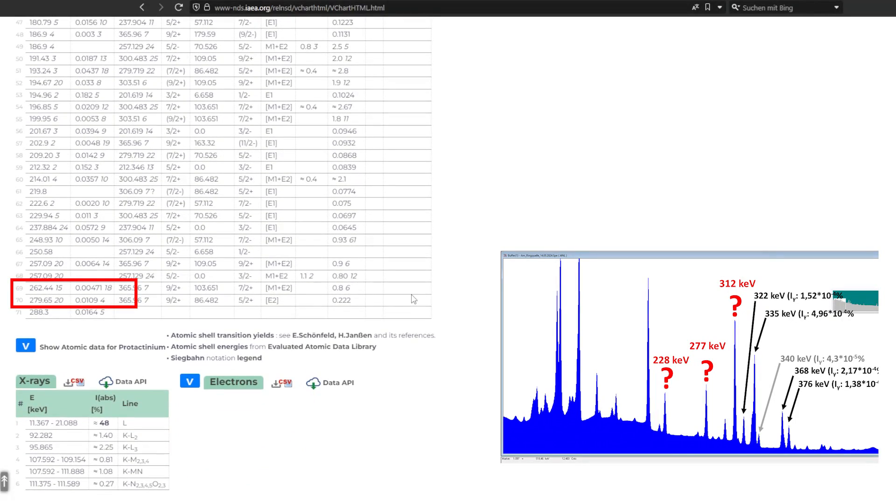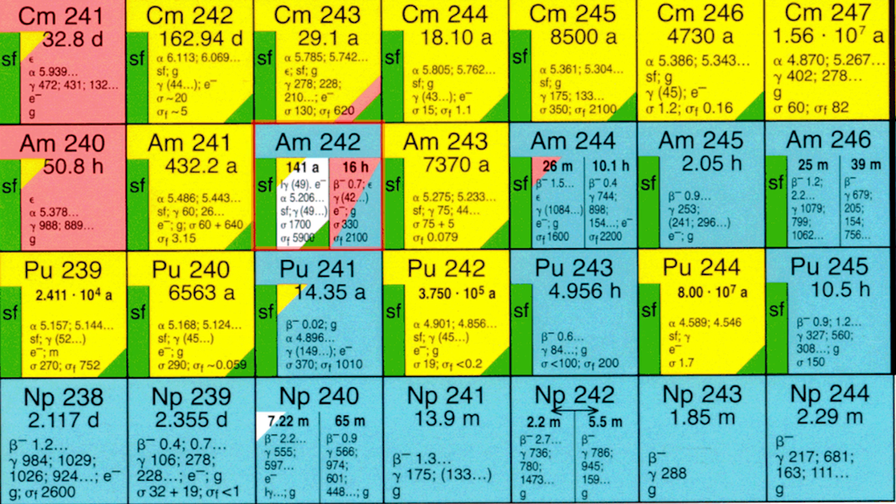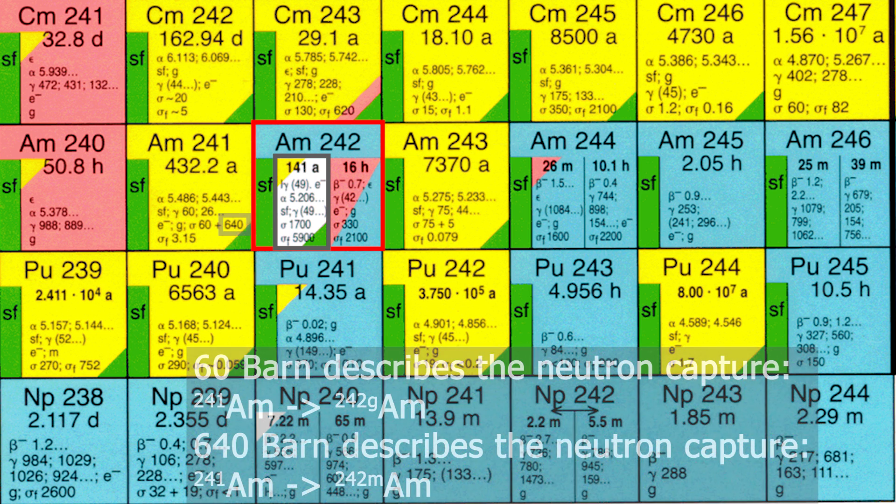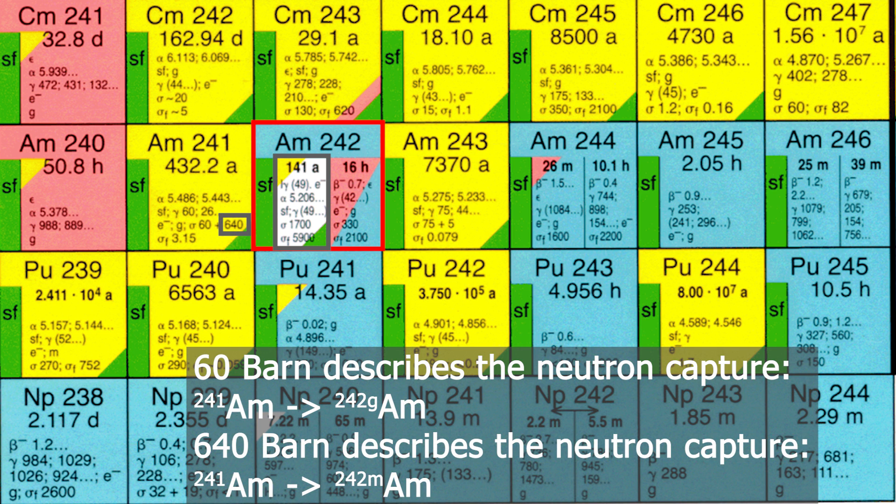Other americium isotopes, like americium-242 for example. Yes, but which one? Probably the americium-242M. The cross section of 640 barn is simply much better, and even if the americium-242G has formed, we wouldn't measure it today due to its half-life.